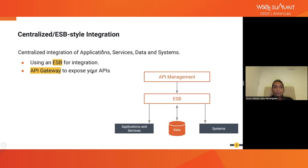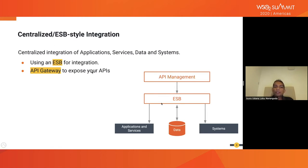Before we move into smart endpoints and dumb pipes, let me take a step back and see the existing centralized ESB-style integration architecture. As you can see in this picture, we have different systems, data, applications and services. We need to integrate these, so we bring in a component called an ESB — the enterprise service bus — into the middle, and do all kinds of wiring between these services and systems. At the ESB, you do all kinds of integration: logging, transformation, routing, filtering — all kinds of integration stuff can happen at the integration layer.